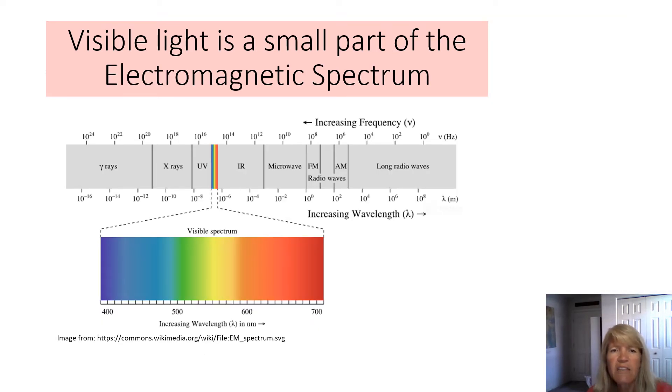Visible light is just a small part of the electromagnetic spectrum. As you can see only this little region right there is what we can see. And then there's wavelengths much longer in the radio waves and FM and AM, microwaves, IR, and wavelengths much shorter in the ultraviolet, X-ray, and gamma rays.